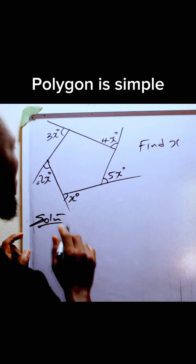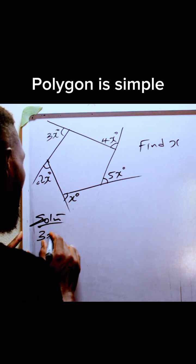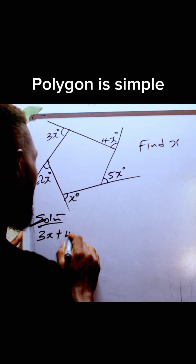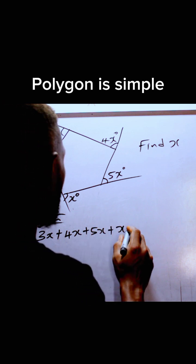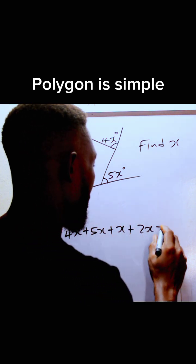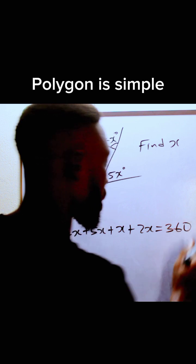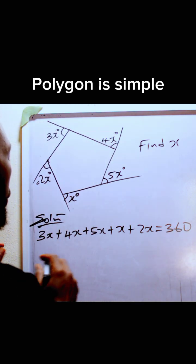Irrespective of the number of sides. So can we say that 3x plus 4x plus 5x plus x plus 2x is equal to 360. That is the sum of the exterior angle of a polygon.